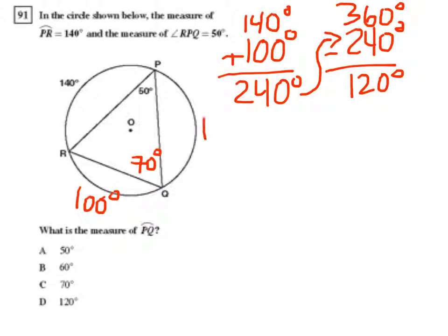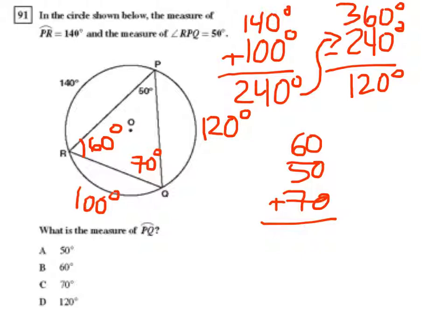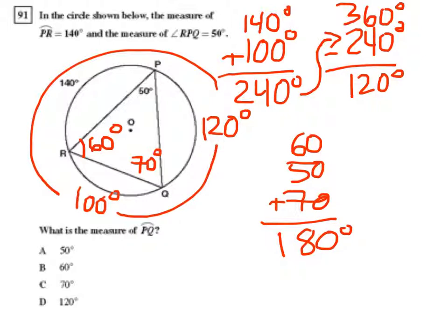So that means the measure of arc PQ is 120 degrees, which means the measure of this angle R here should be half of that, or 60 degrees. Let's double check our work. If I add 60 plus 50 plus 70 degrees, this should equal the total for the sum of the angles in a triangle, which should be 180. And indeed, I get 180 degrees, and I also get 360 degrees around the outside of the circle.